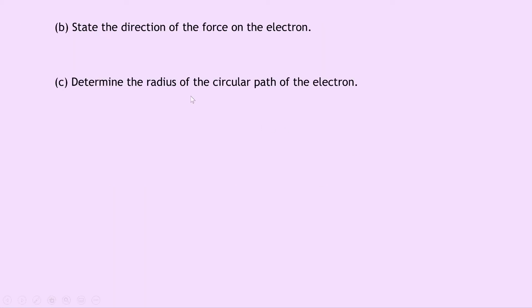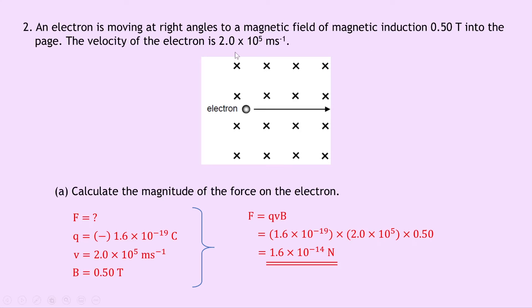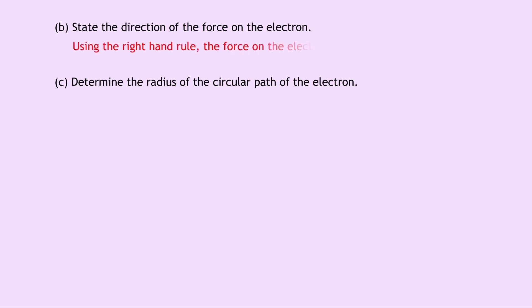Part B says to state the direction of the force on the electron. We use the right-hand rule again. The field this time is going into the page, so take your index finger and point it into the page, then take your middle finger and point it to the right. With your right hand, your thumb should be pointing downwards. Because we're dealing with a negatively charged particle, we don't have to flip the direction, so the force on the electron will be downwards, towards the bottom of the page.